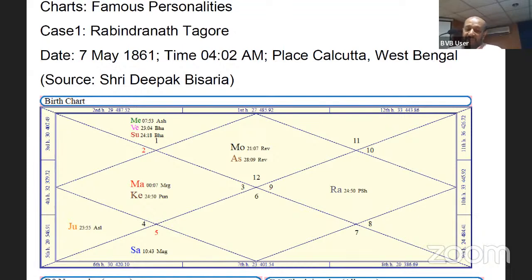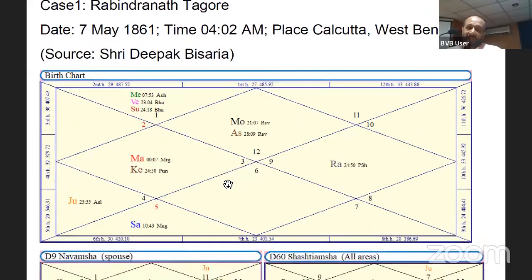So in addition, I talked about other charts. This is for D1. Along with that, we see D9, D24 for knowledge and D60 for overall promises.